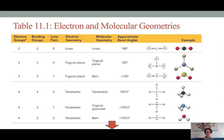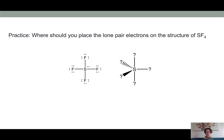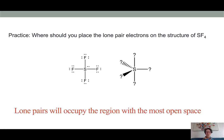Table 11.1 from your textbook illustrates all of the names of the shapes of the different electron and molecular geometries, as well as the approximate bond angles for all of the possibilities that you'll be seeing as you go through your practice problems. So I recommend you take a good look at that resource. I'm going to leave you with one last practice problem. Where should you place the lone pair electrons on the structure of sulfur tetrafluoride? Hint, the lone pairs will occupy a region with the most open space. Alright, good luck and see you next time.